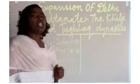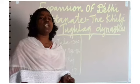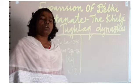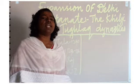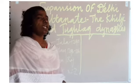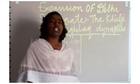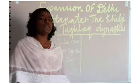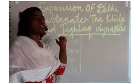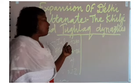When the Tughluq dynasty came to an end, and after the declination of the Mamluk dynasty, the Khalji dynasty came into being.